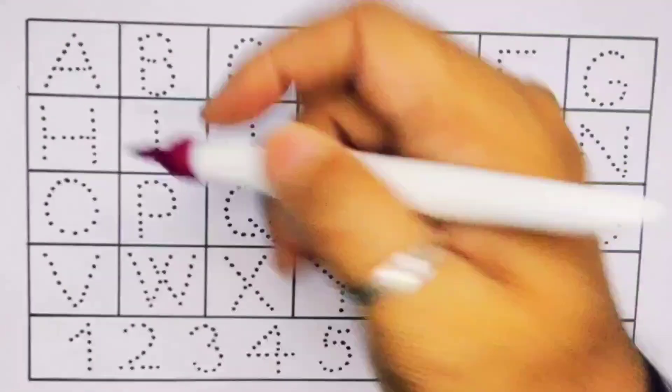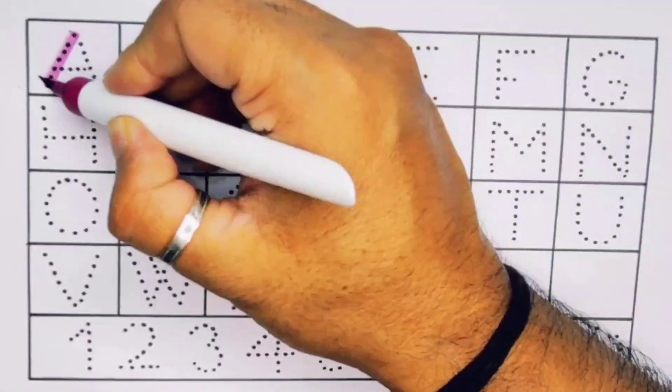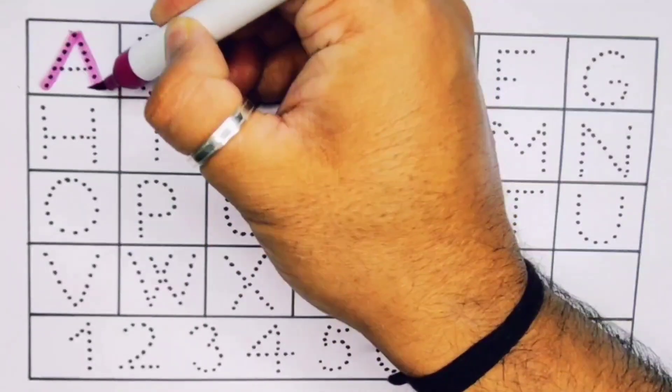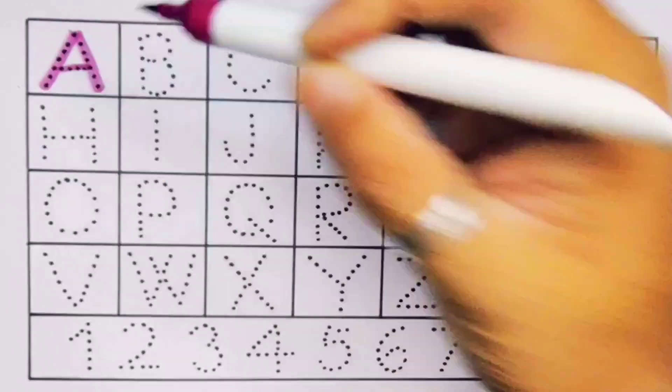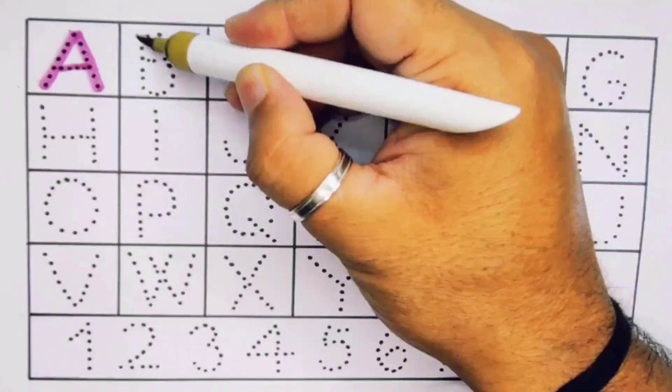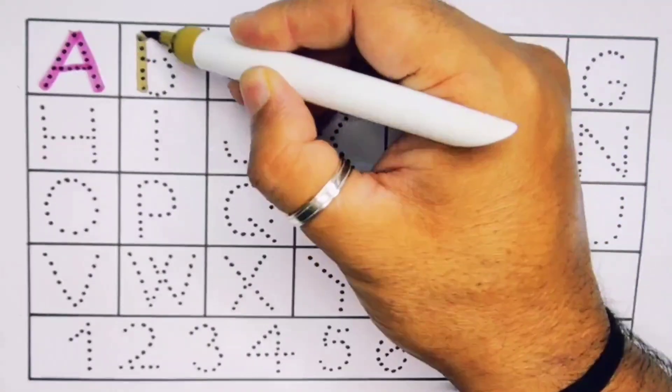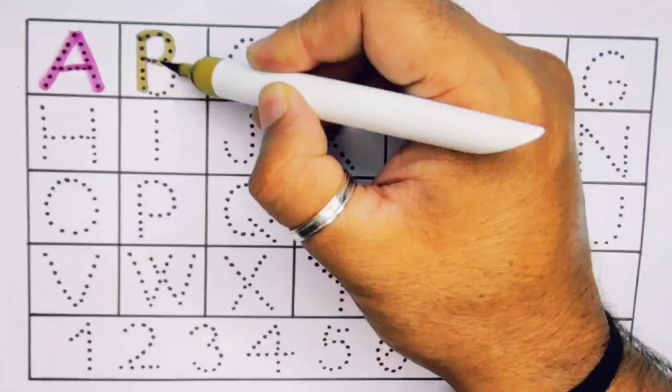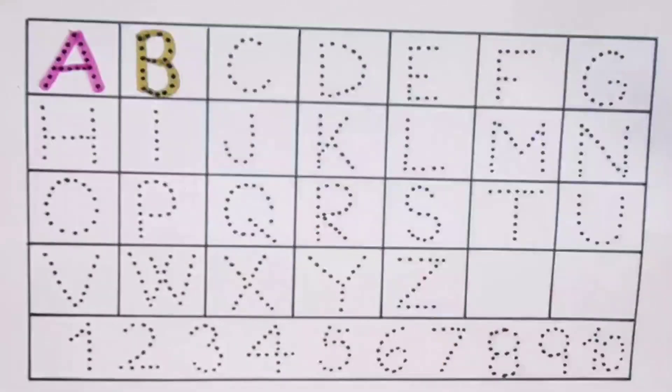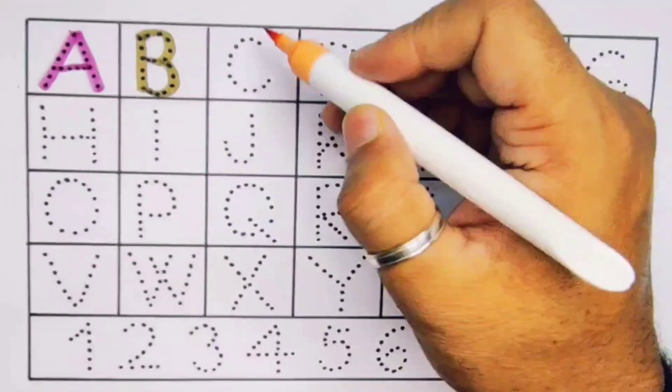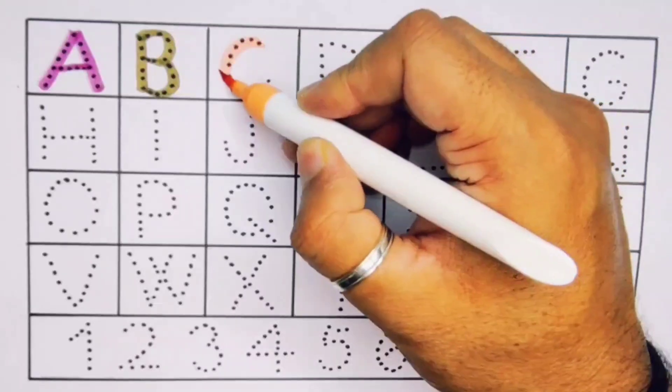Now the alphabet A, A for apple, next B, B for ball, next C, C for cat.